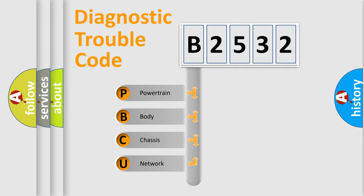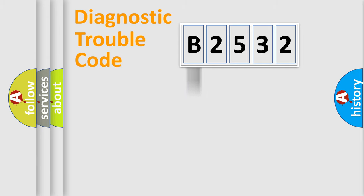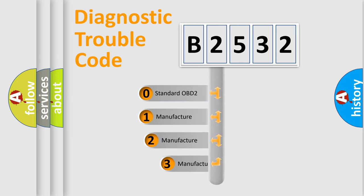We divide the electrical system of the automobile into four basic units: Powertrain, Body, Chassis, and Network. This distribution is defined in the first character of the code.